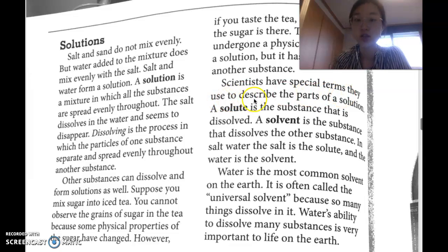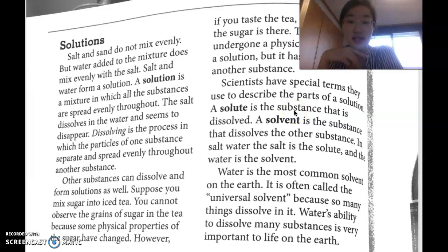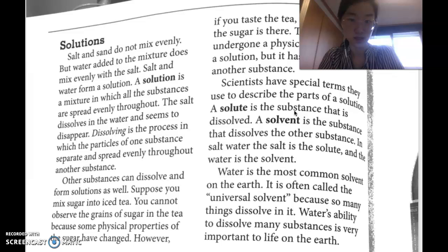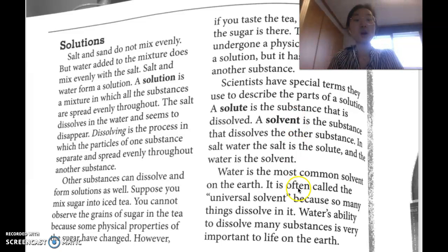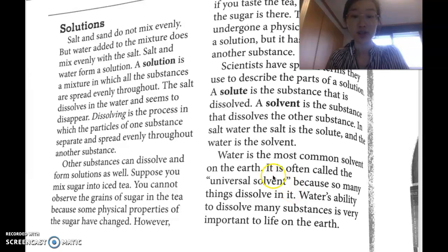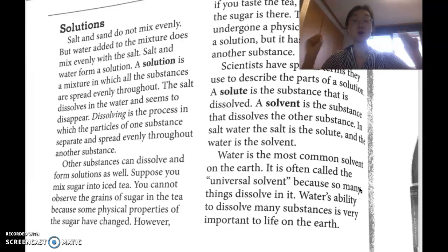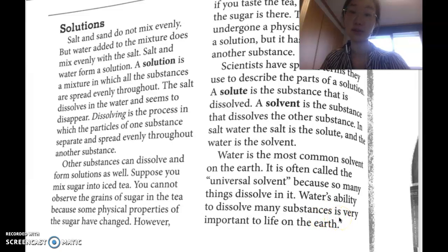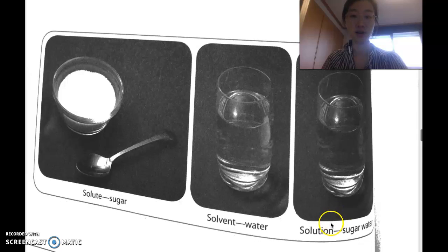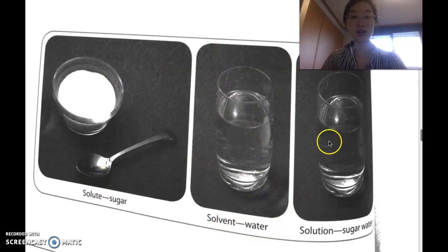'Scientists have special terms to describe the parts of a solution. A solute is the substance that is dissolved — our sugars and salts. A solvent is a substance that dissolves the other substance, like water. In salt water, the salt is the solute and the water is the solvent. Water is the most common solvent on Earth, often called the universal solvent, because so many things dissolve in it.' Here we have a visual: sugar is the solute, water is the solvent, and together they form the solution.